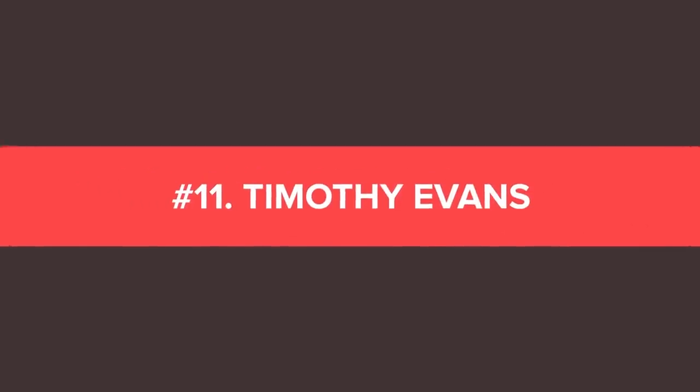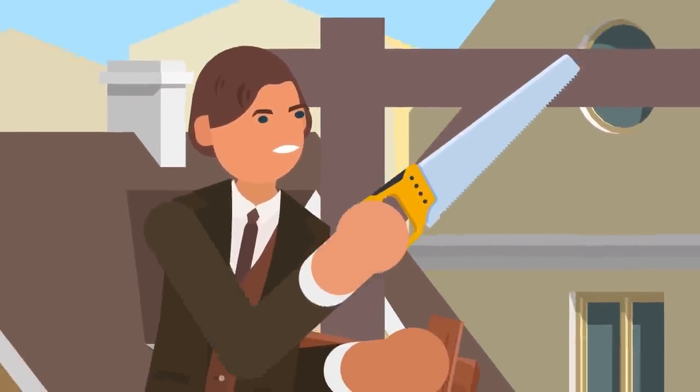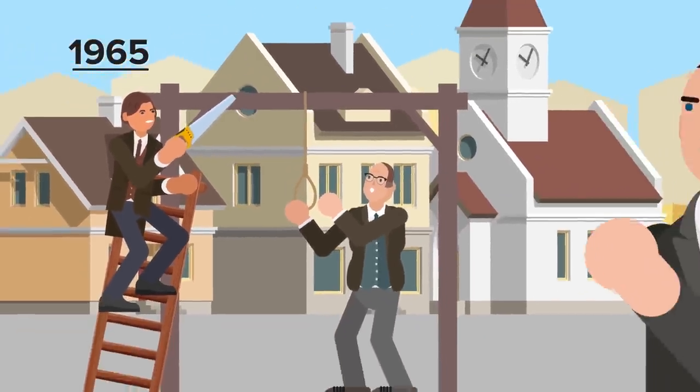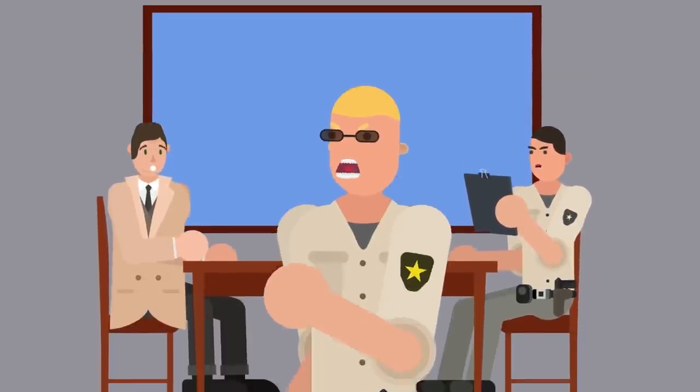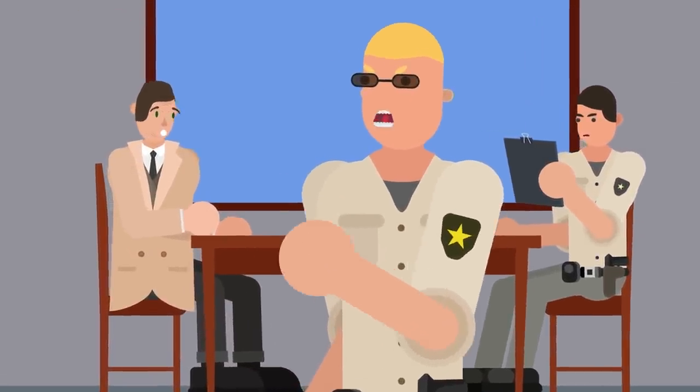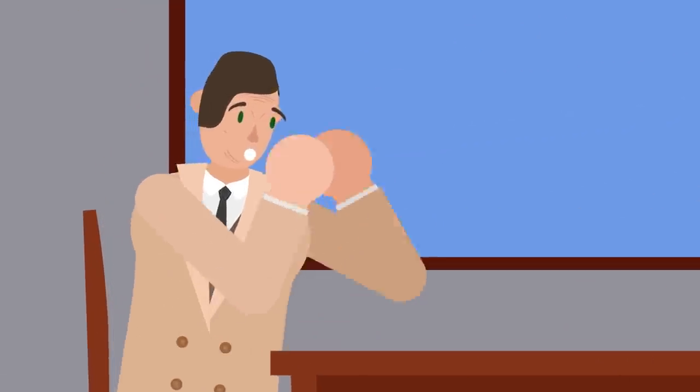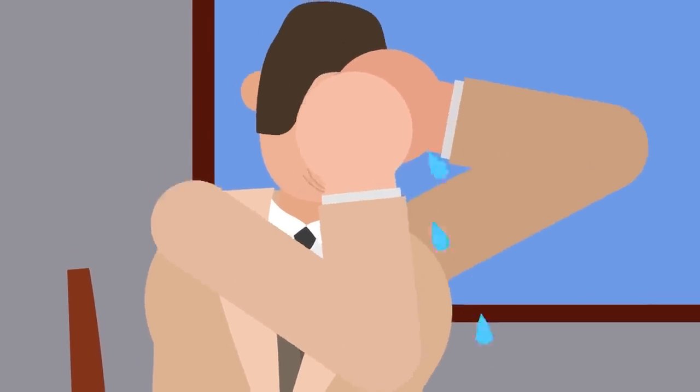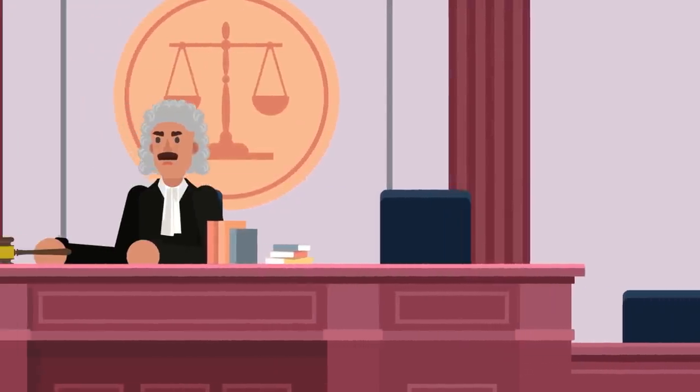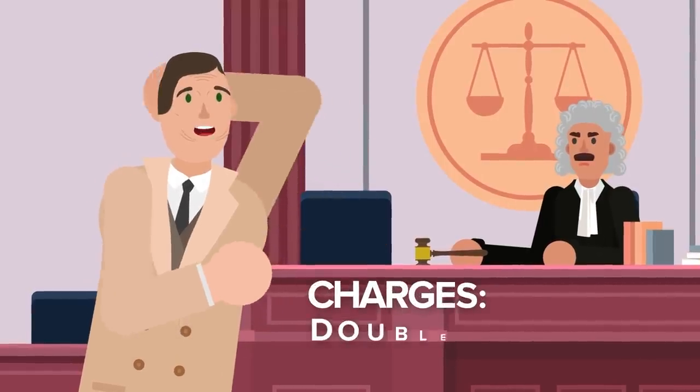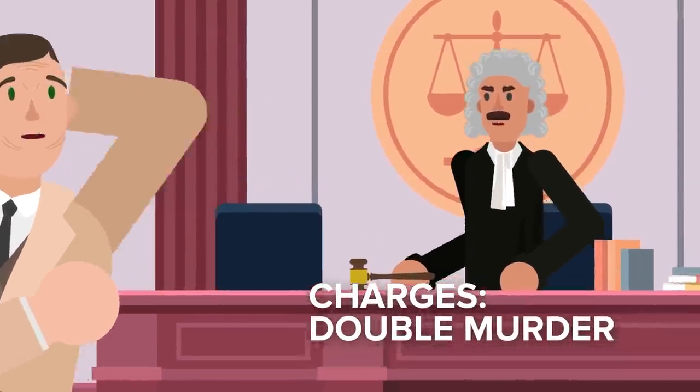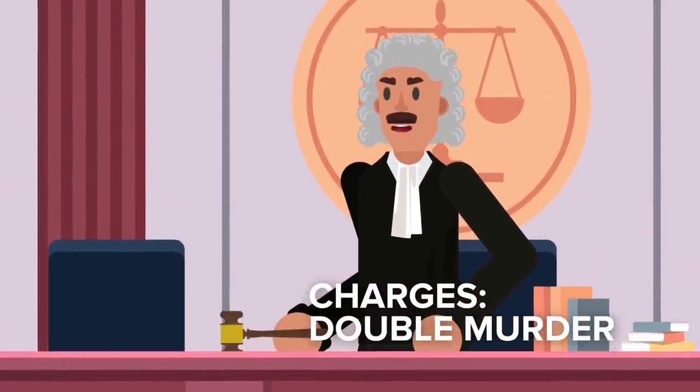Number 11. Timothy Evans. Now over to England. While the death penalty was abolished there in 1965, they've got plenty of wrongful executions under their belt before the cutoff. One such execution was the death of Timothy Evans in 1950. He tearfully confessed to the accidental killing of his wife during a botched abortion and accepted the grim consequences. Timothy wasn't in possession of his full mental faculties and was easily persuaded during his three-day trial. He was charged with double murder for his wife and unborn child before being hanged at Pentonville Prison.